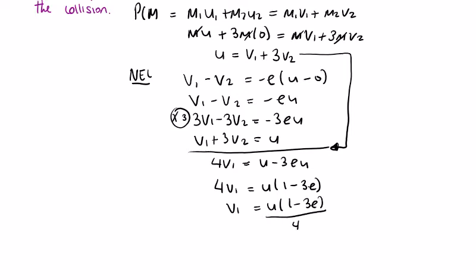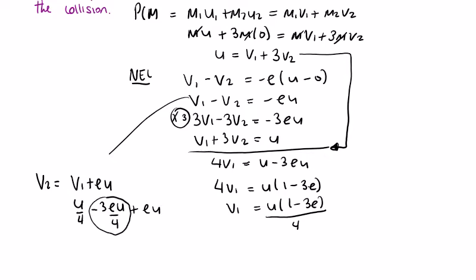For v2, I use the Newton's law equation rearranged: v2 = v1 + eu. Substituting v1: that's u/4 - 3eu/4, and then adding eu. So -3eu/4 plus a full eu gives +eu/4.